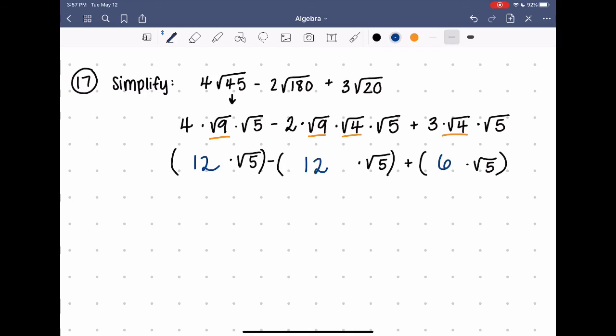And now I have three terms with the same radical. So this is just 12 root 5, this is negative 12 root 5, and this is positive 6 root 5. I can just add and subtract that outer part of the radical. So 12 minus 12 is 0, plus 6 is 6. So I end up with 6 root 5.